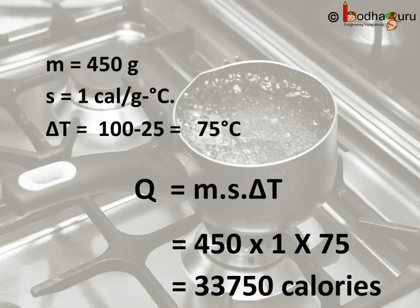If we put all the values in the given equation, that is Q equals M multiplied by S multiplied by delta T, then we can find the amount of heat.